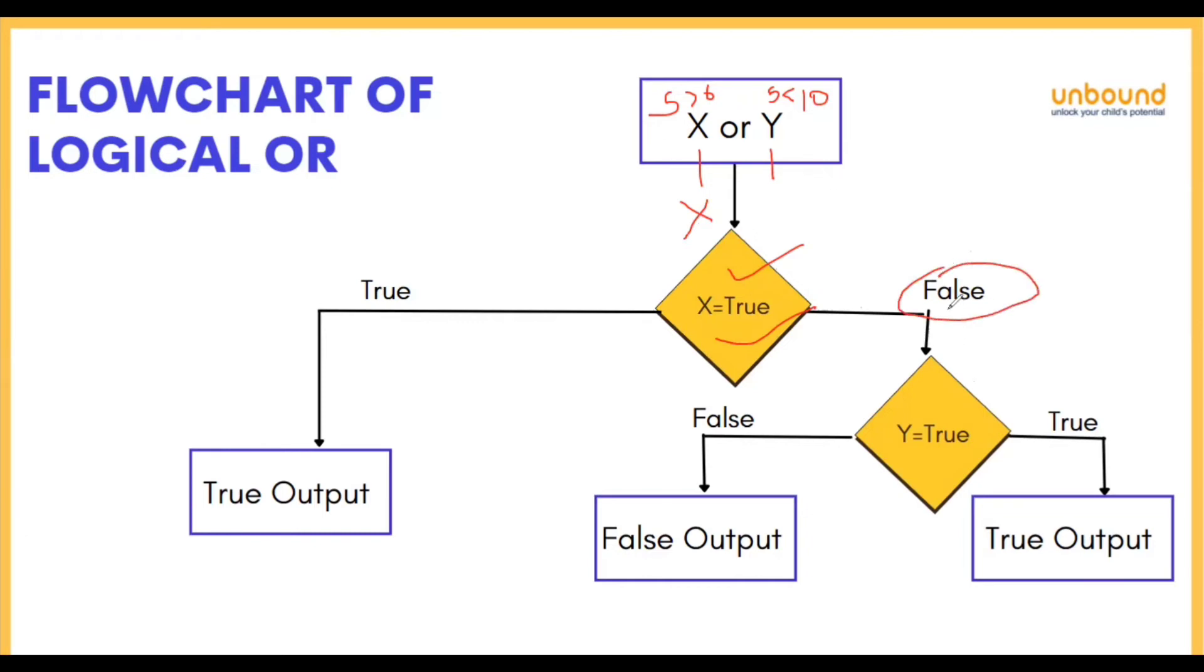Now seeing one of the values is false, it will move to the another value, which is y. Now y is true, so it will move to the true part and you will get a true output.